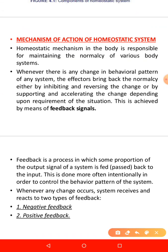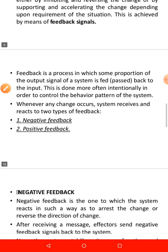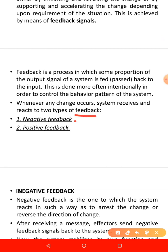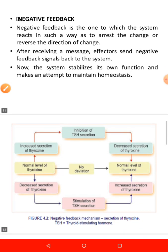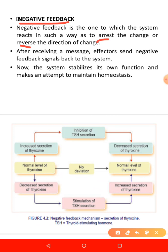The mechanisms of homeostasis work through feedback signals. There are two types: negative feedback and positive feedback. A negative feedback is one in which the system reacts in such a way as to arrest the change or reverse the direction of the change. For example, if pH was increasing, the body will react to reduce it. The effector sends negative feedback signals back to the system, and the system stabilizes its own function to maintain homeostasis.